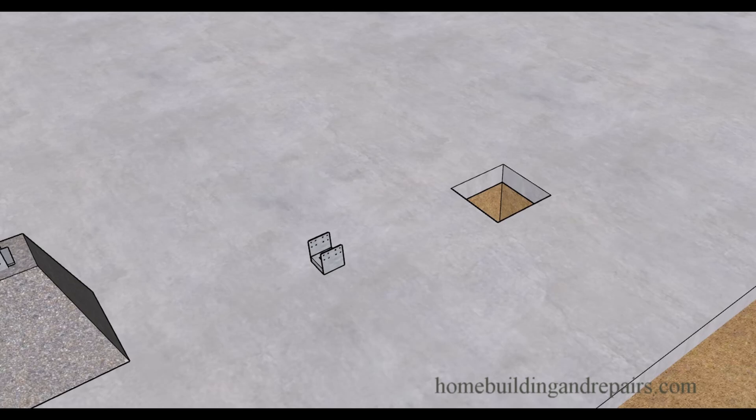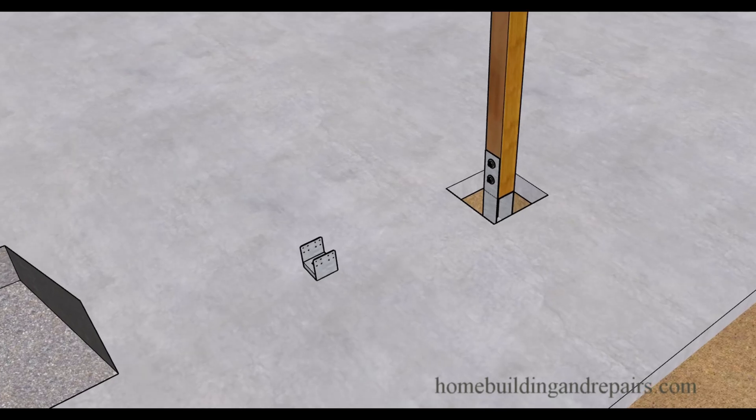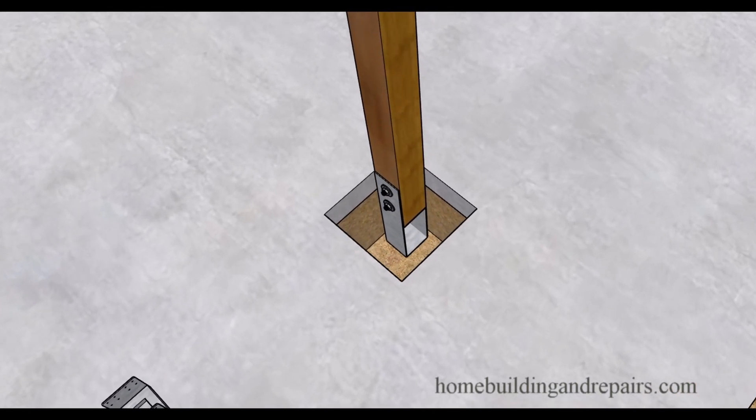You will need to cut a hole in the concrete slab. You can use a concrete saw for that. Those are available at your local rental yards. And then of course you will need to get your post base.